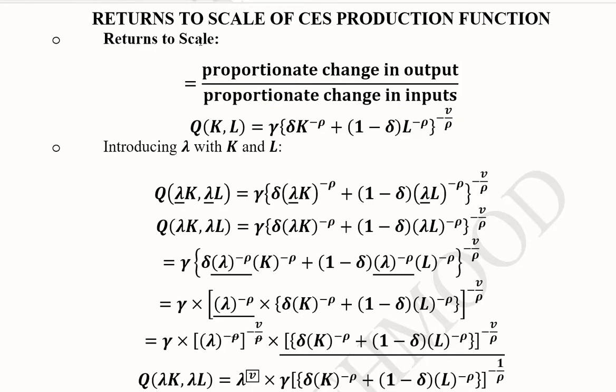Now coming to returns to scale, we know that it is proportional change in output divided by proportional change in inputs. This is how we assess returns to scale. If the value is greater than 1, equal to 1, or less than 1, we get IRS, CRS, and DRS.